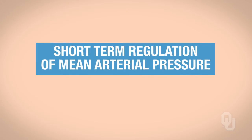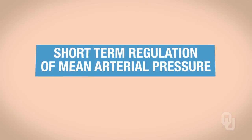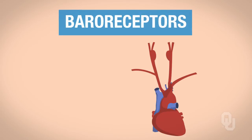The goal of this lecture video is to focus on the short-term regulation of mean arterial pressure, our MAP. We will be discussing baroreceptors. As a quick recap, baroreceptors are located in the carotid sinuses and in the aortic arch.